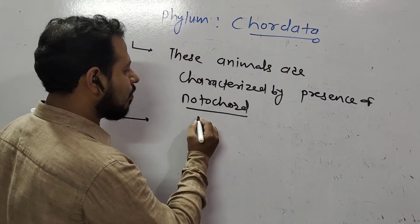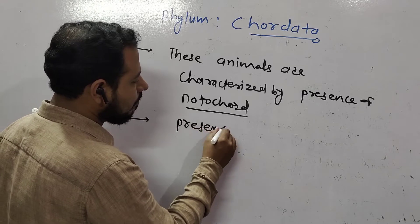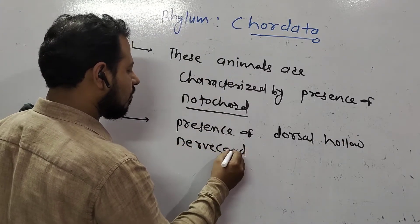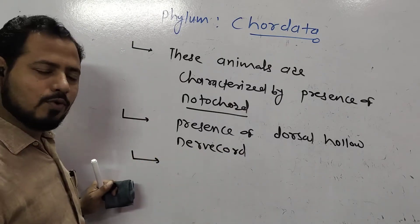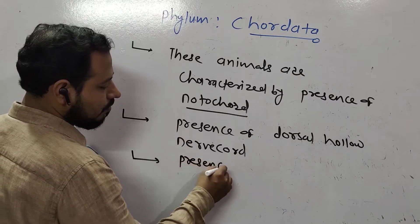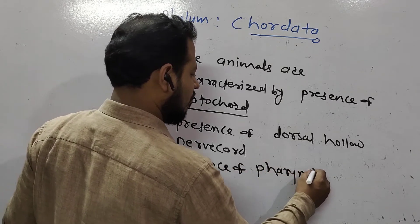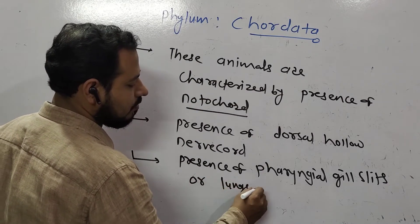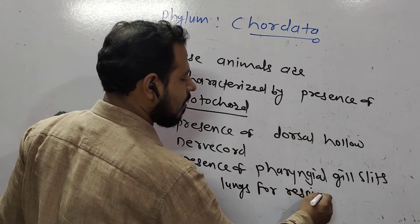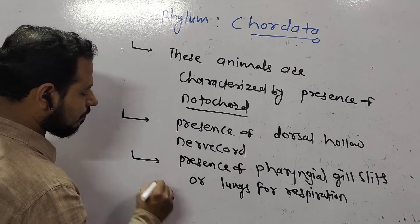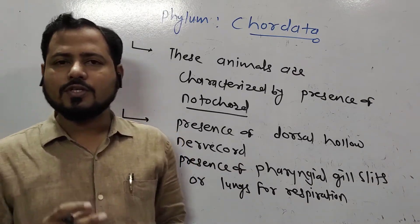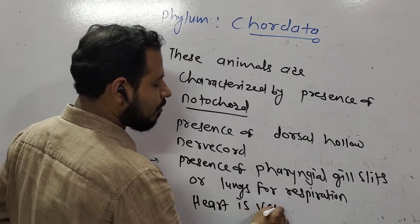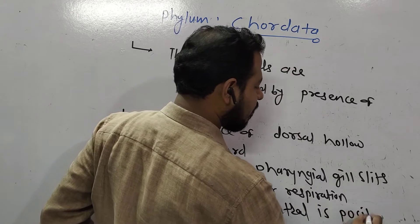Similarly, another feature of phylum Chordata is the presence of a dorsal hollow nerve cord. They also show presence of pharyngeal gill slits for respiration, or lungs for respiration — so they can respire by gills in water or by lungs on land. Another characteristic feature is that the heart is ventral in position.